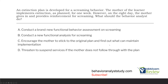Option C — encourage the mother to stick to the original plan and find out what can maintain implementation. For a week the mother was able to implement the plan, so you need to figure out how to maintain her behavior of implementing it. Encourage her to go back to the plan. Option D — threaten to suspend services if the mother does not follow through. That is way too harsh. She did it for seven days and had one bad day. We need to revert back to the plan and figure out what can maintain the mother's implementation — essentially applying ABA to her as well. The answer is C.